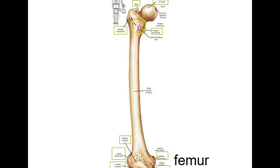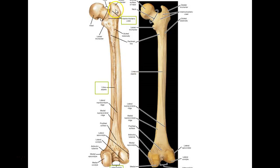There's a line between the trochanters on the front, but it's not very prominent on models. On the back side there's a more prominent intertrochanteric crest. Going down is the shaft or diaphysis. There's the patellar surface where the kneecap sits, a medial condyle, a lateral condyle, a medial epicondyle, and a lateral epicondyle.